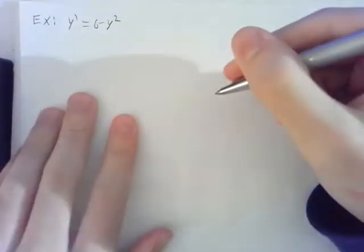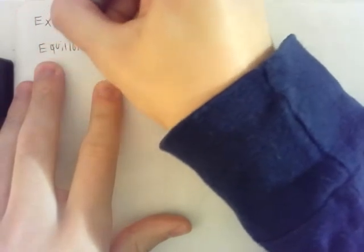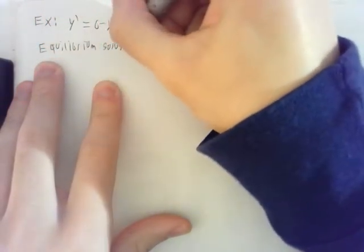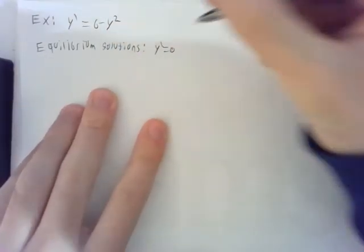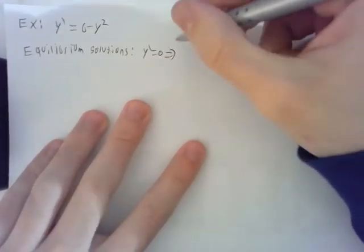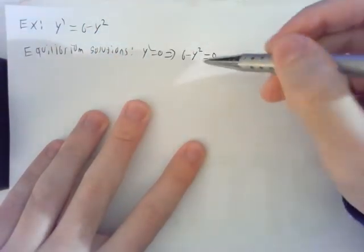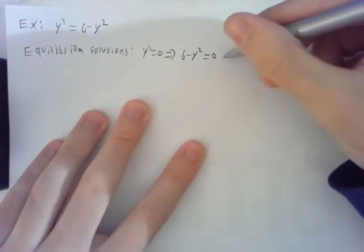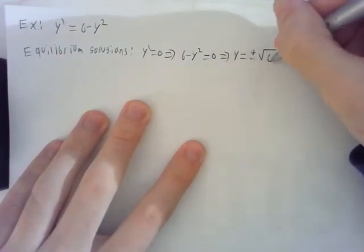So I'd like to look at the equation y prime equals 6 minus y squared. So first let's find the equilibrium solutions. So remember this is where y prime is equal to zero. That means that we'll have from the differential equation here 6 minus y squared equals zero. And if you just rearrange this and take the square root, you see that y has to be plus or minus square root of 6.